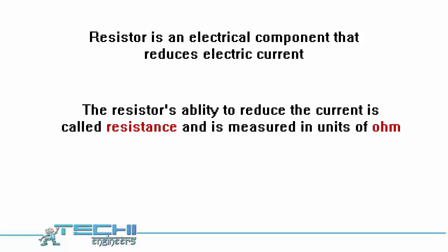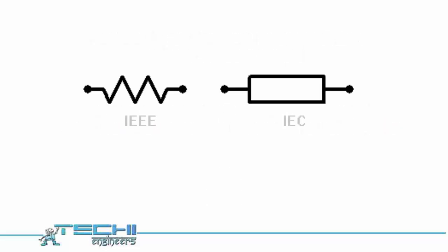Here you can see the symbol for ohm. There are two types of standard symbol for a resistor. On the left side, the zigzag type of symbol is from the American standard, and on the right side is the international standard by IEC.